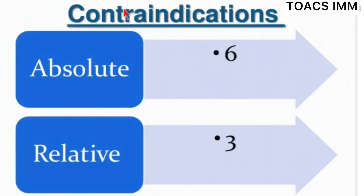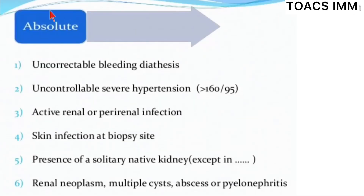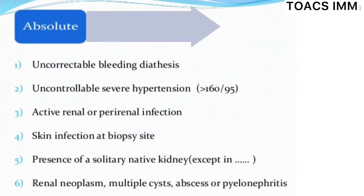There are six absolute contraindications and three relative contraindications. Absolute contraindications are: number one, uncorrectable bleeding diathesis; number two, uncontrollable severe hypertension, that is 168 over 95; number three, active renal or pararenal infection; number four, skin infection at biopsy sites; number five, presence of a solitary native kidney or renal neoplasm; and number six, abscess or pyelonephritis.